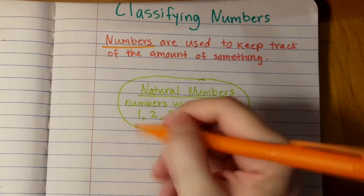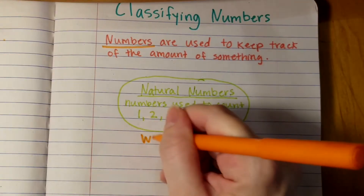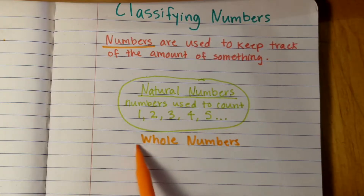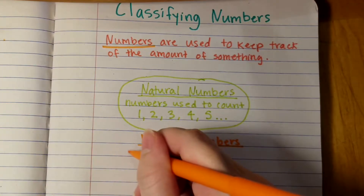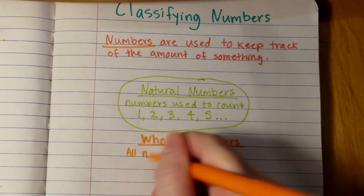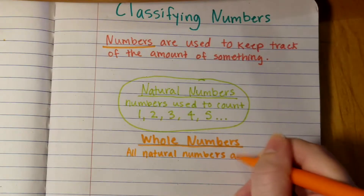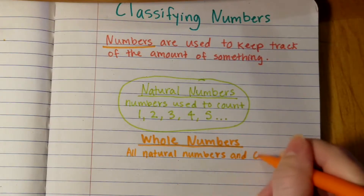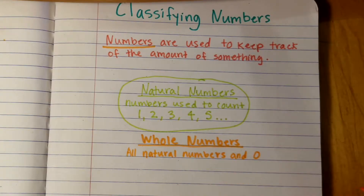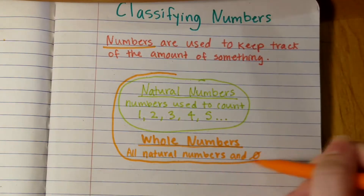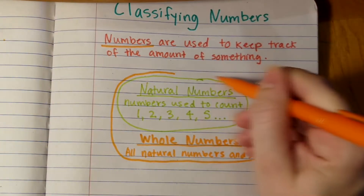Zero is considered a whole number, which is the next classification. All natural numbers are also considered to be whole numbers. To represent this, we will create a bigger circle around the natural numbers and zero.